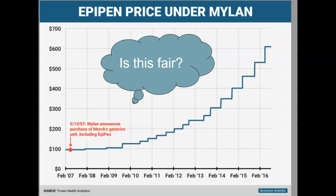Looking at the price of epi pens: Mylan announced the purchase of Merck's generics unit including the epi pen, and then the price under Mylan became extraordinarily expensive. An epi pen is an injection you take to help with an anaphylactic or allergic reaction that can be life-threatening. Students at Edina High School carry epi pens, and there are epi pens in the nurse's office. If you don't have the income to spend six hundred dollars on an epi pen, you could be putting your health at risk. Is it fair for Mylan to charge such high prices for something life-saving?